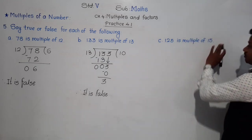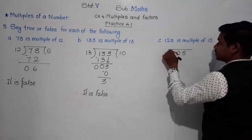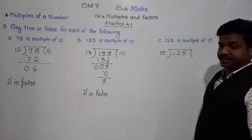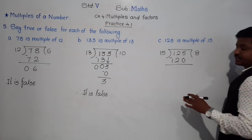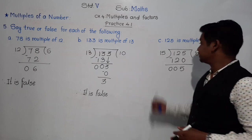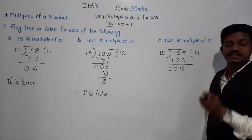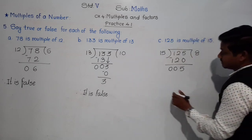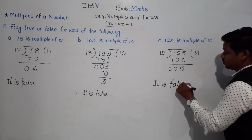Third statement: 125 is a multiple of 15. 15×8=120, which is the nearest multiple of 15 below 125. 125 minus 120 = 5, so the remainder is 5. Since 125 is not divisible by 15, it is not a multiple of 15. The statement is false.